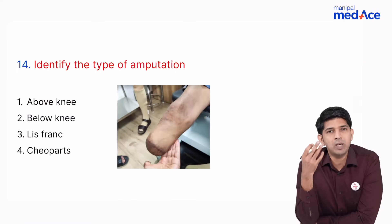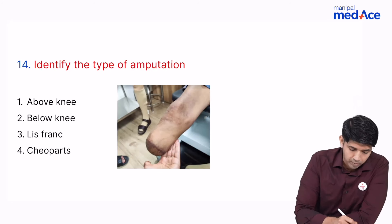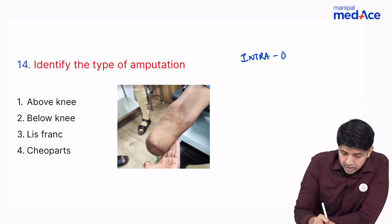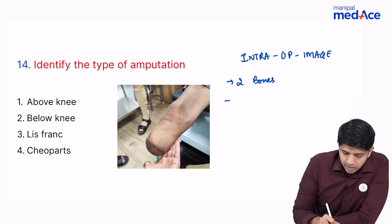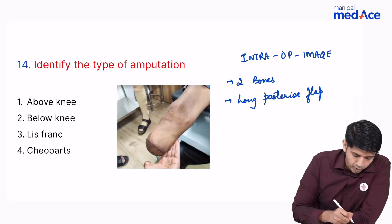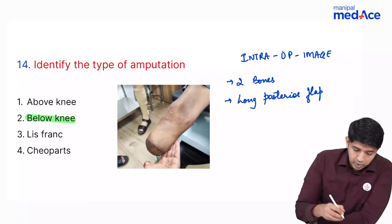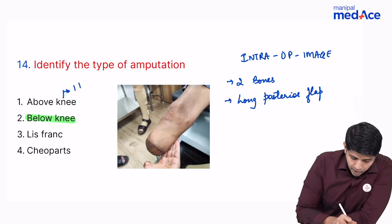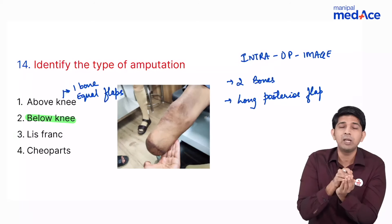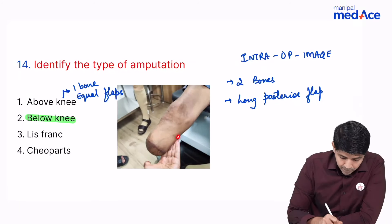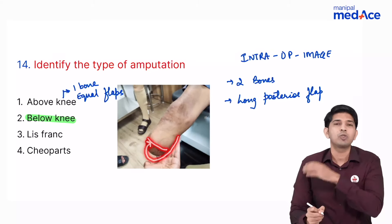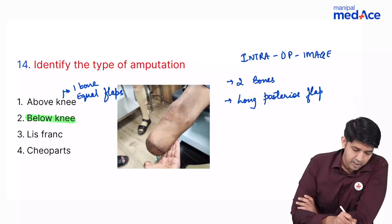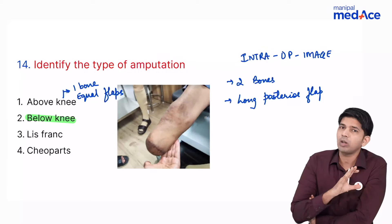An intraoperative image showed an amputation with two bones visible and a long posterior flap — pointing to a below knee amputation. In above knee amputation there is only one bone and equal anterior and posterior flaps. In below knee amputation the posterior flap comes from behind and is stitched at the front. Lisfranc and Chopart are foot amputations and were automatically ruled out.